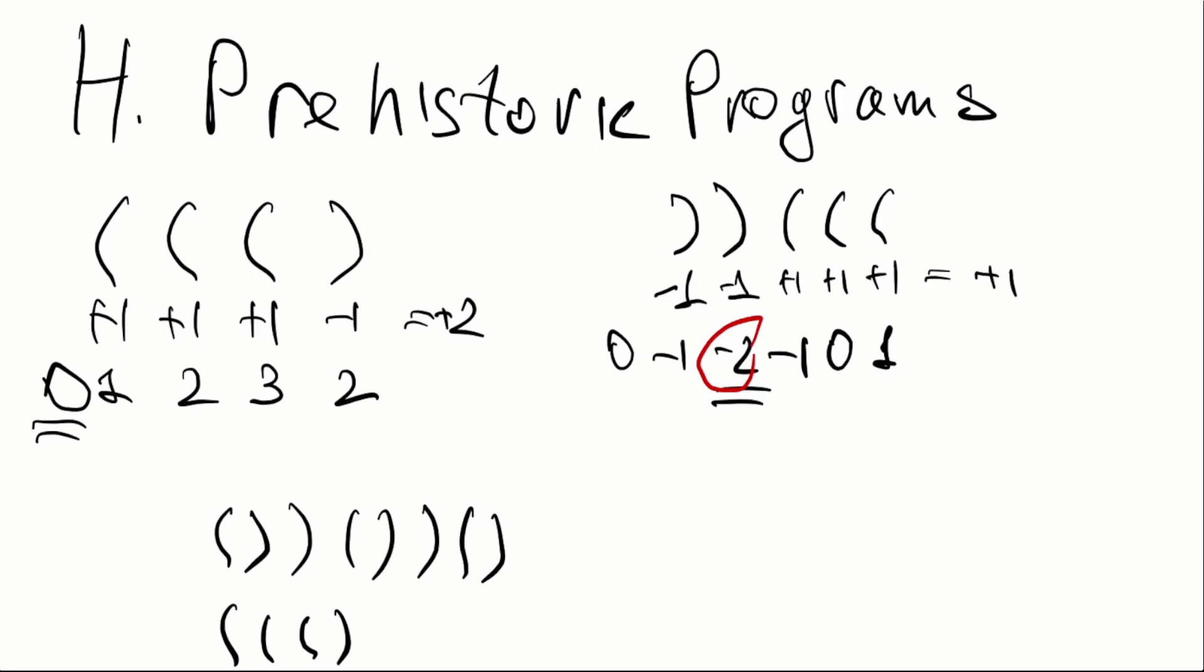So how to solve the problem? First of all, we can calculate for each of the sequences its total balance Ti and its minimum balance Mi.